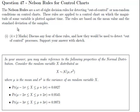In this exercise we're going to look at the Nelson Rules. The Nelson Rules are a set of eight decision rules used for detecting out of control or non-random conditions on control charts. These rules are applied to a control chart on which the magnitude of some variable is plotted against time. The rules are based on the mean value and standard deviation of the samples. A lot of this is actually to do with the normal distribution. If you're familiar with the normal distribution and some basic probability, you should have a fair idea of some of the rules.